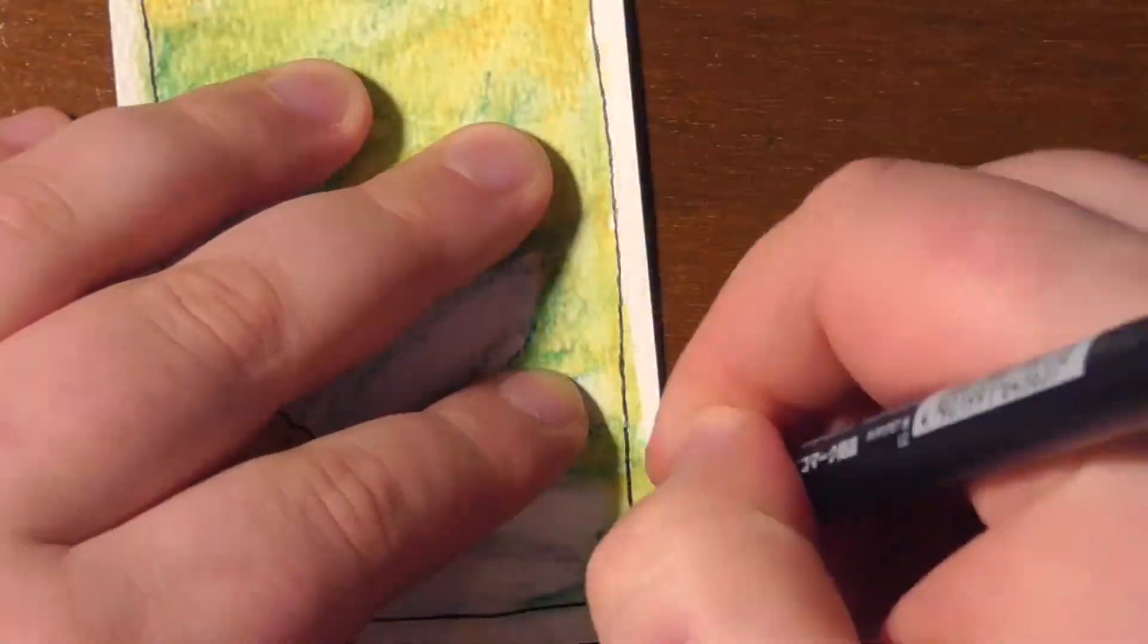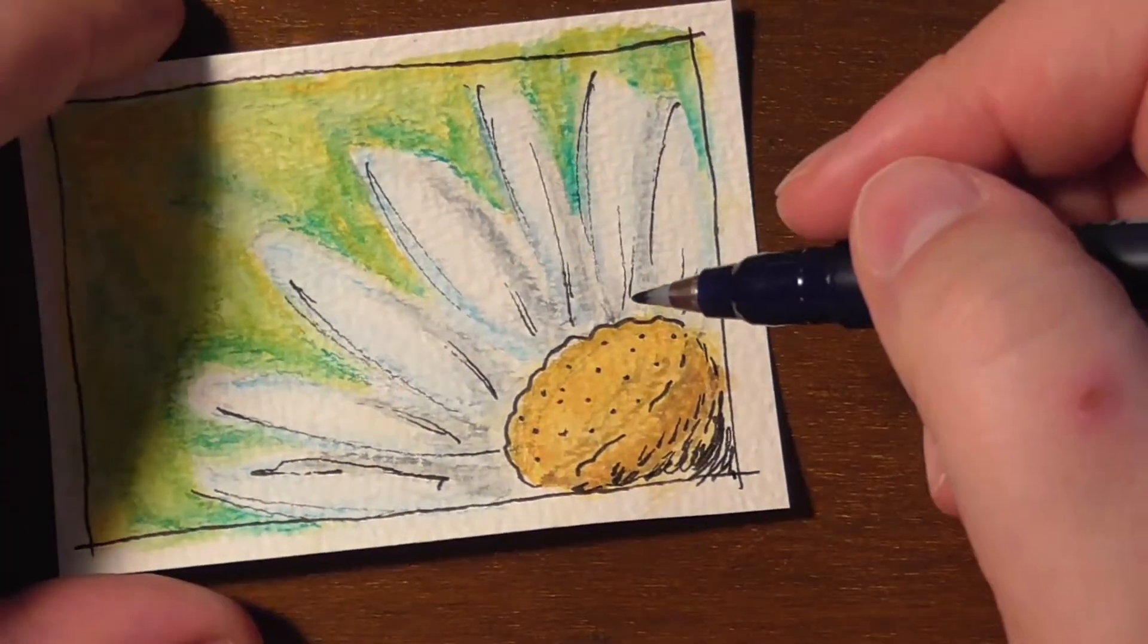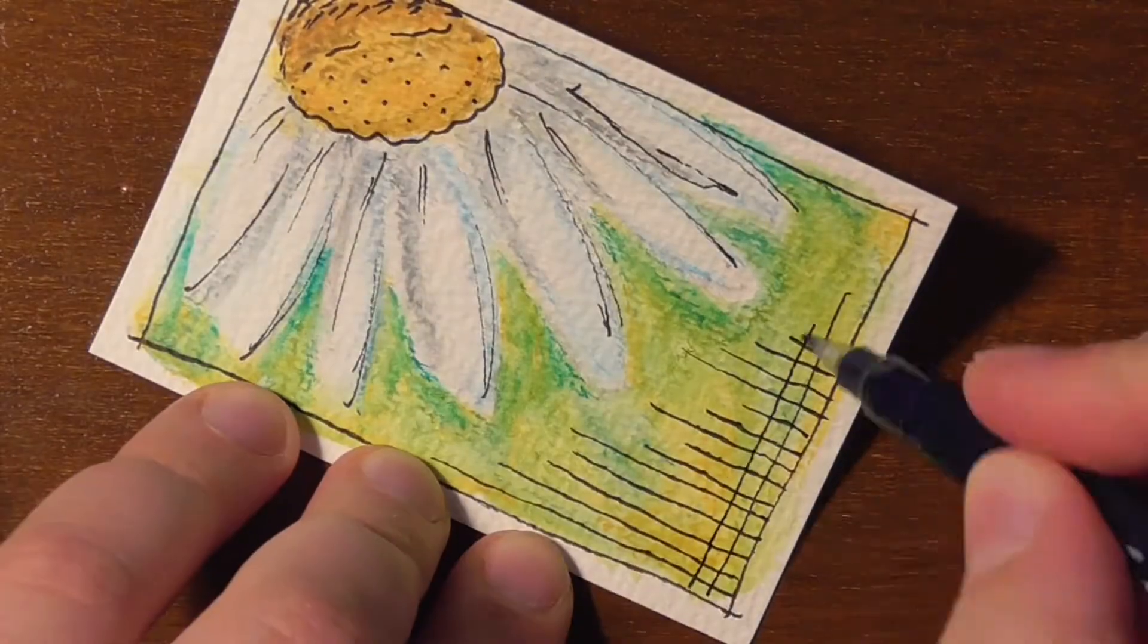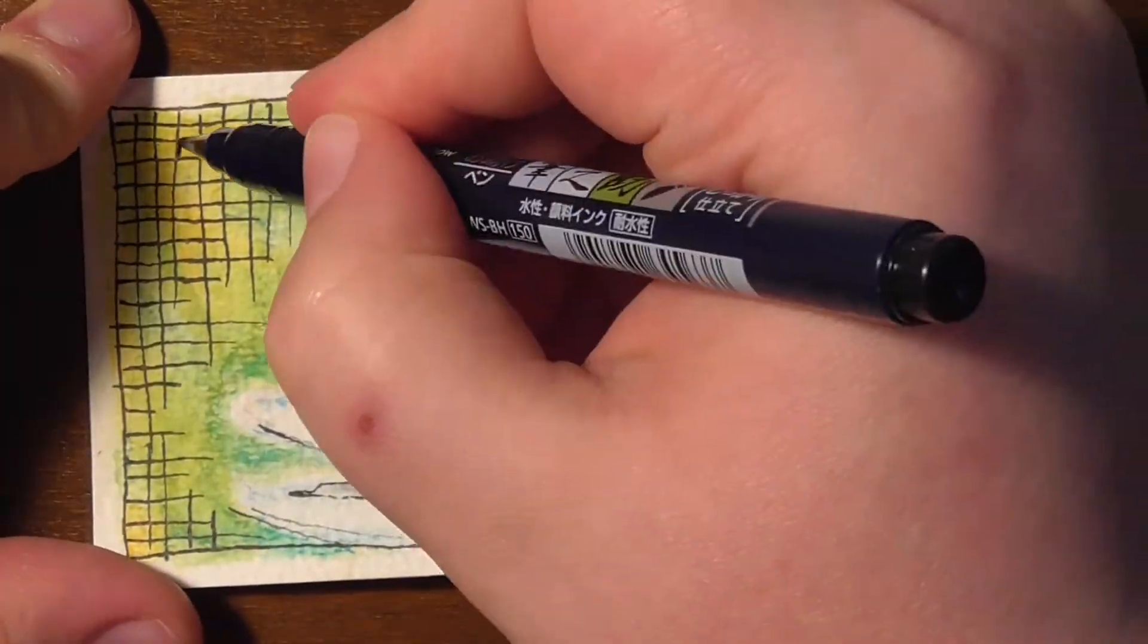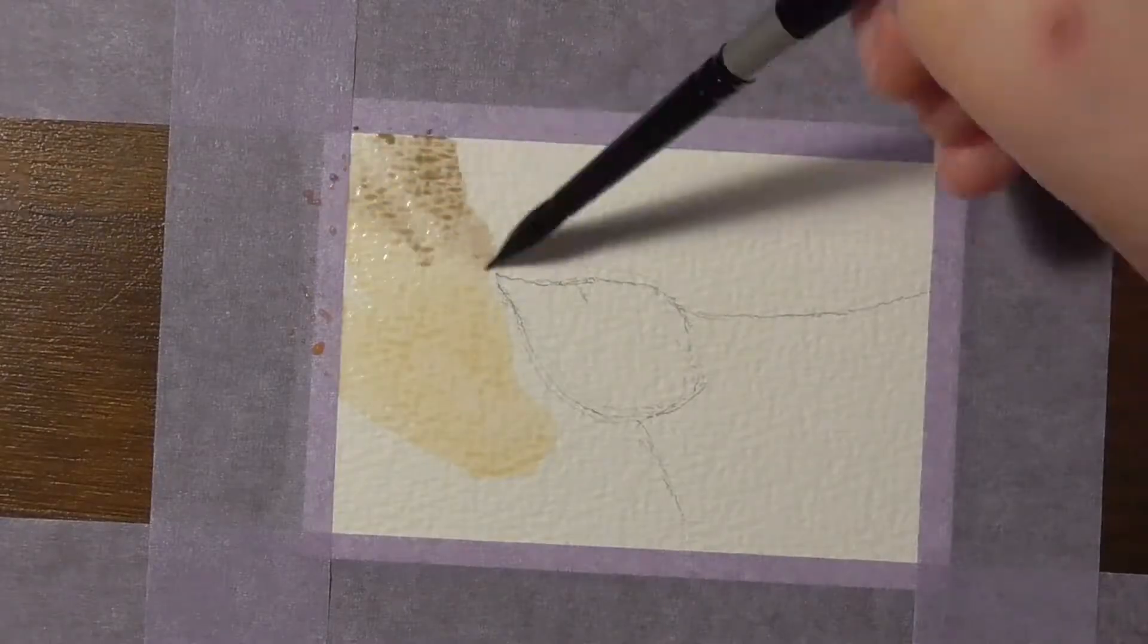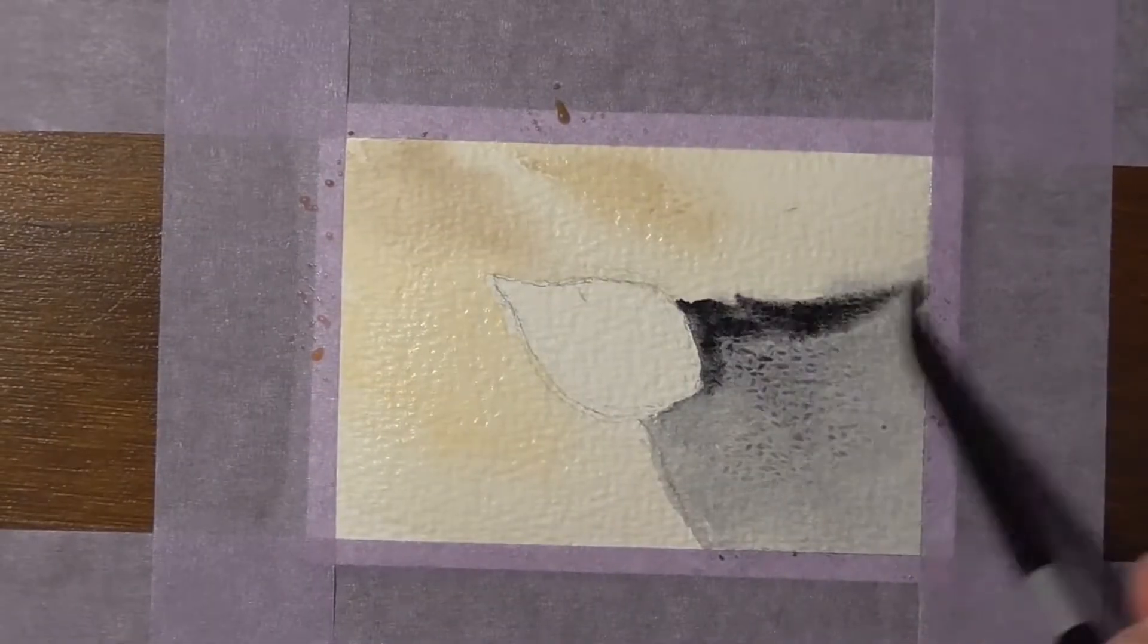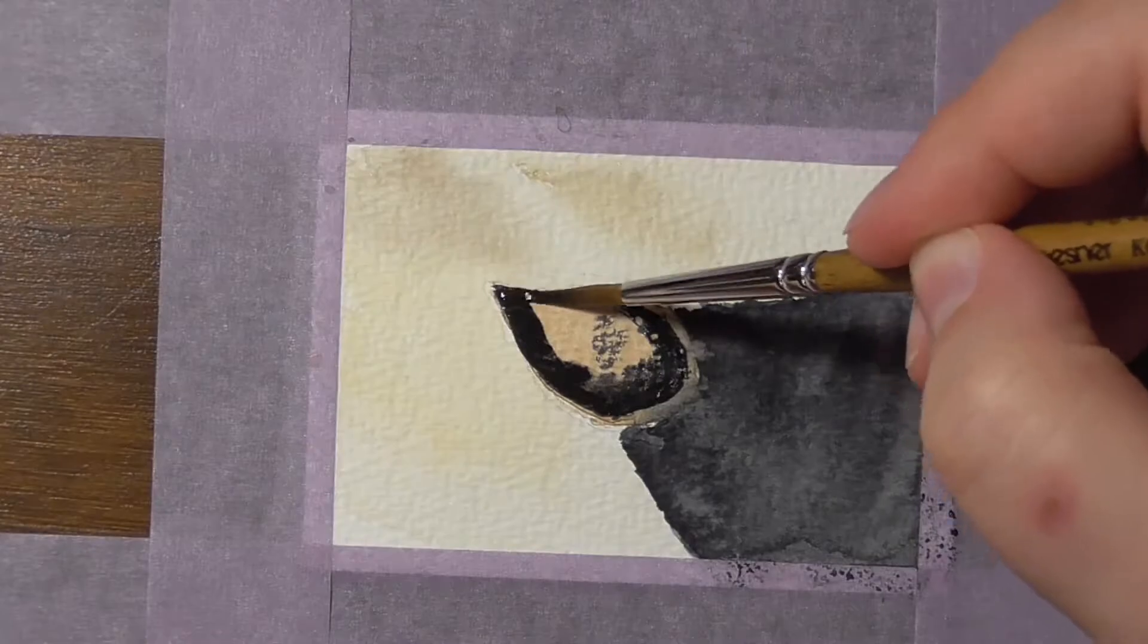So the ACEO challenge is pretty nice. We make these little art pieces that are two and a half by three and a half inches big, and as you can see in the video they are pretty small so it doesn't take too much time to paint on these cards and they are actually pretty neat. They can be exchanged or traded or even sold as little art pieces.